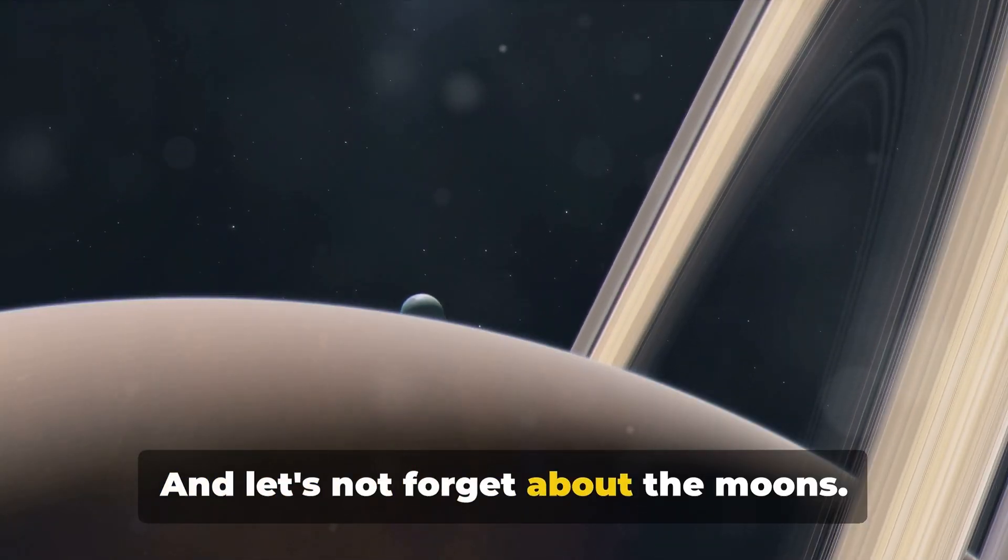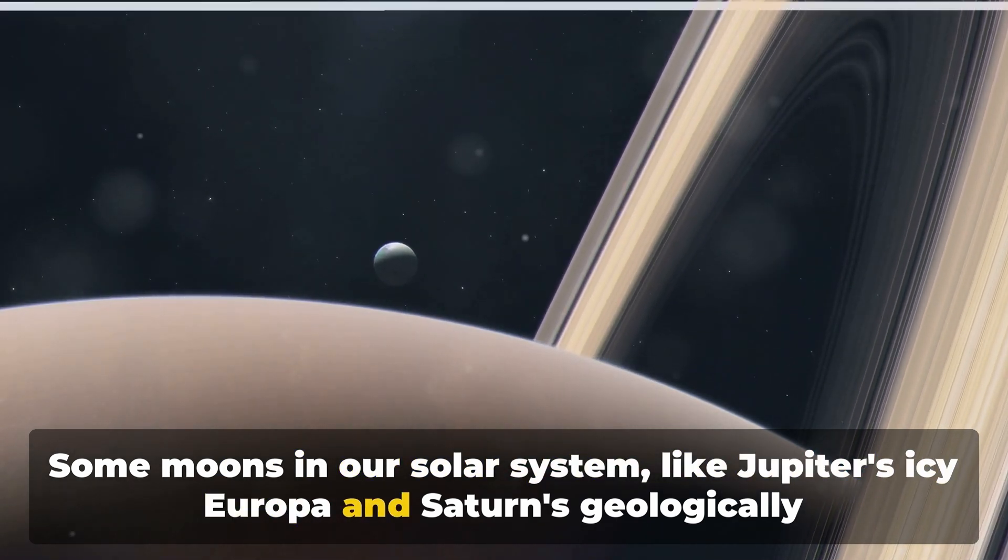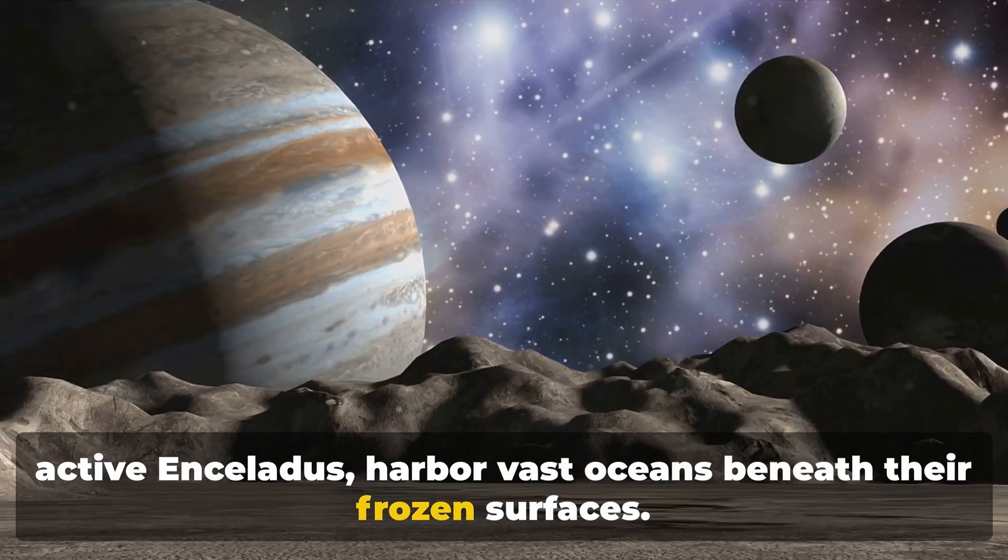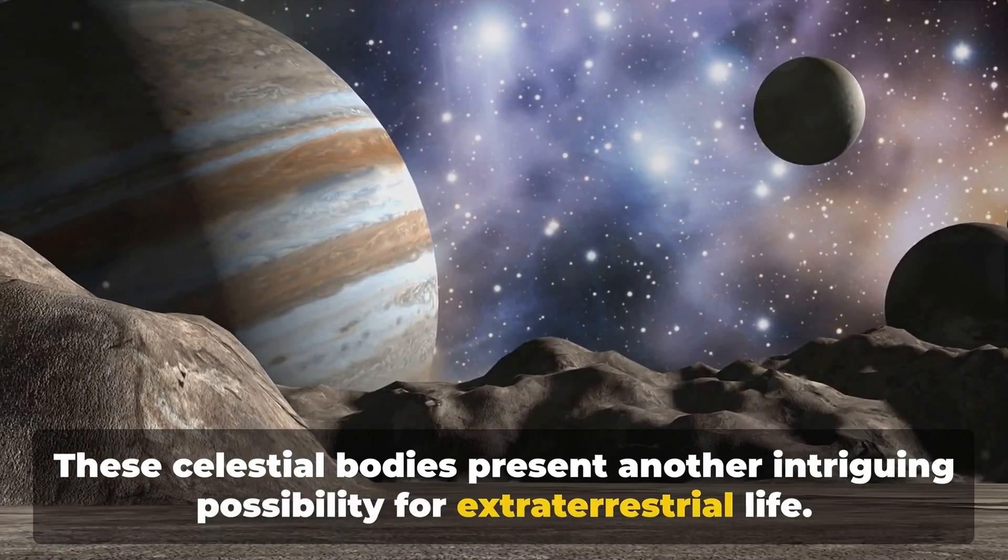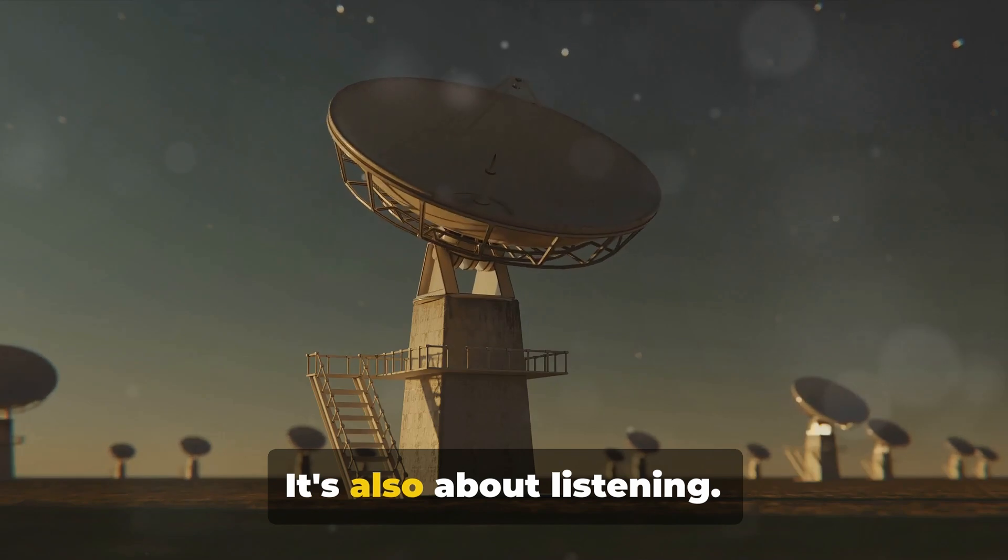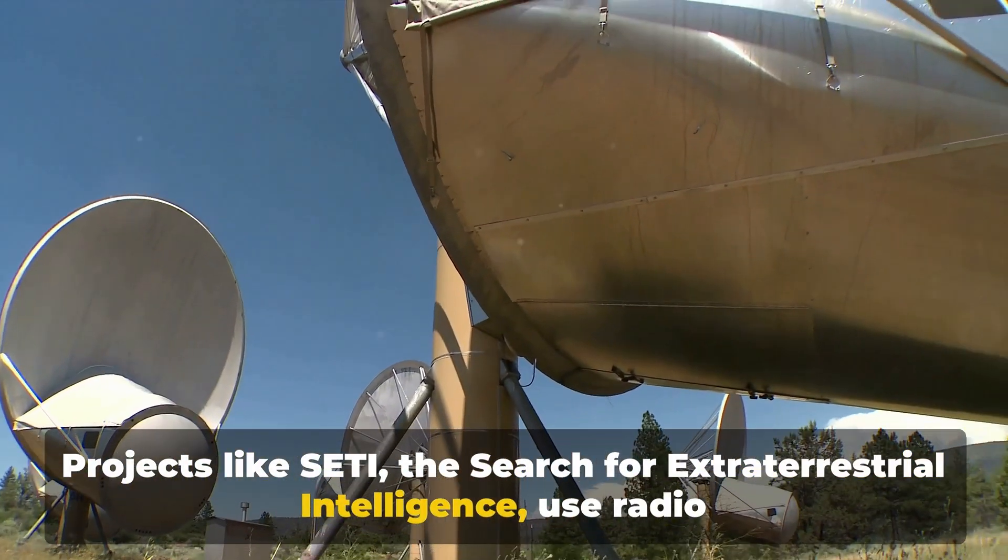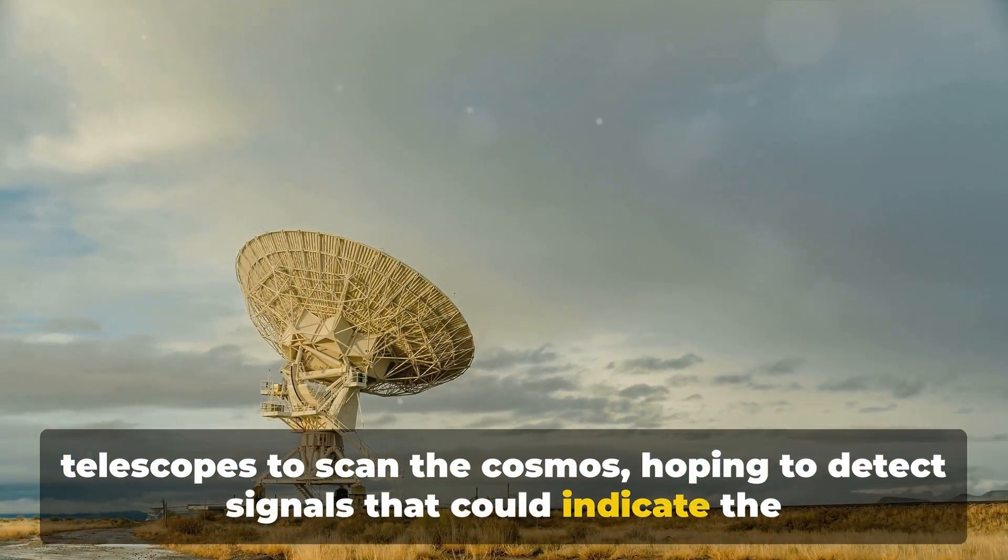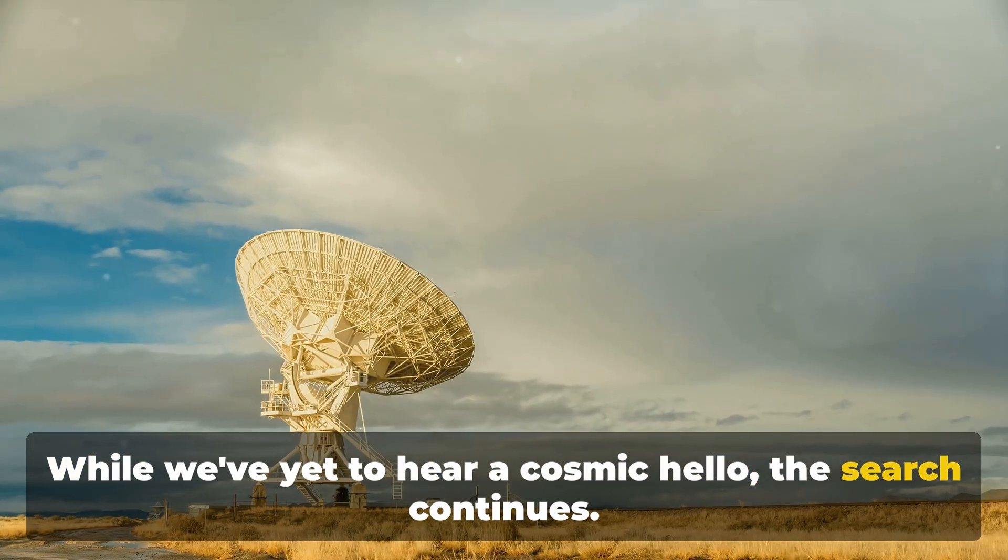And let's not forget about the moons. Some moons in our solar system, like Jupiter's icy Europa and Saturn's geologically active Enceladus, harbor vast oceans beneath their frozen surfaces. These celestial bodies present another intriguing possibility for extraterrestrial life. But the search for life isn't just about finding the right conditions. It's also about listening. Projects like SETI, the Search for Extraterrestrial Intelligence, use radio telescopes to scan the cosmos, hoping to detect signals that could indicate the presence of intelligent life. While we've yet to hear a cosmic hello, the search continues.